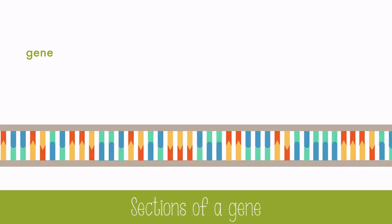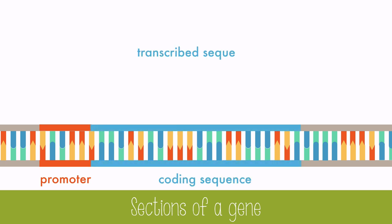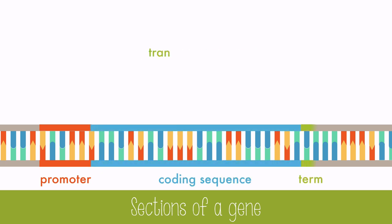Genes are the sequences of DNA which transcribe into RNA, typically becoming protein during translation. Genes have three main parts: the promoter, which is the transcription initiation site; the coding sequence, which is transcribed; and the terminator, which is the site where transcription ends.